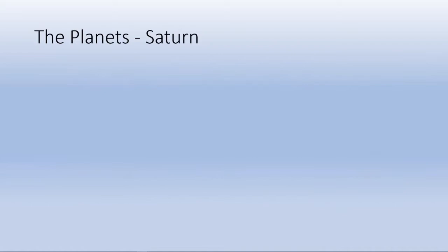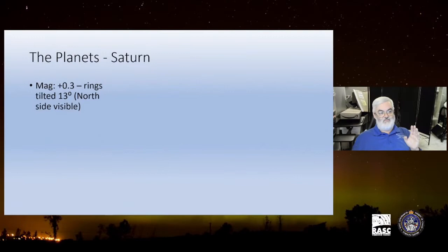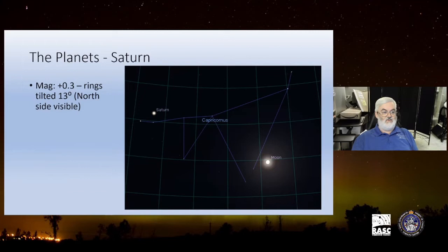Saturn, the magnitude right now is about plus 0.3 and the rings are tilted 13 degrees, so the north side of it is visible as far as we are looking out there to see it. And it's in Capricorn, so you will have the opportunity to see it. It's four degrees south of the moon August 11th-12th, so you have this good opportunity once again to find Saturn very easily.